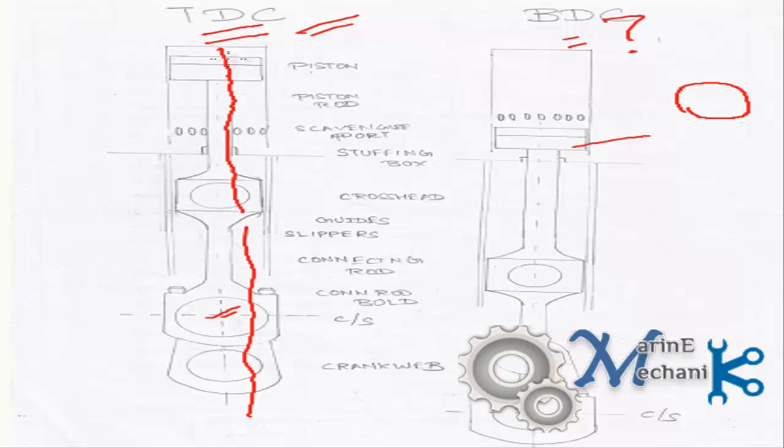At two positions, that is at the top and at the bottom, the axis of the piston, piston rod, crosshead, connecting rod, crank pin, and the crank webs lie exactly in a dead straight line. That's the reason this is called dead center. And thus when the piston reaches top, it's called top dead center, and when the piston reaches bottom, it's called bottom dead center.